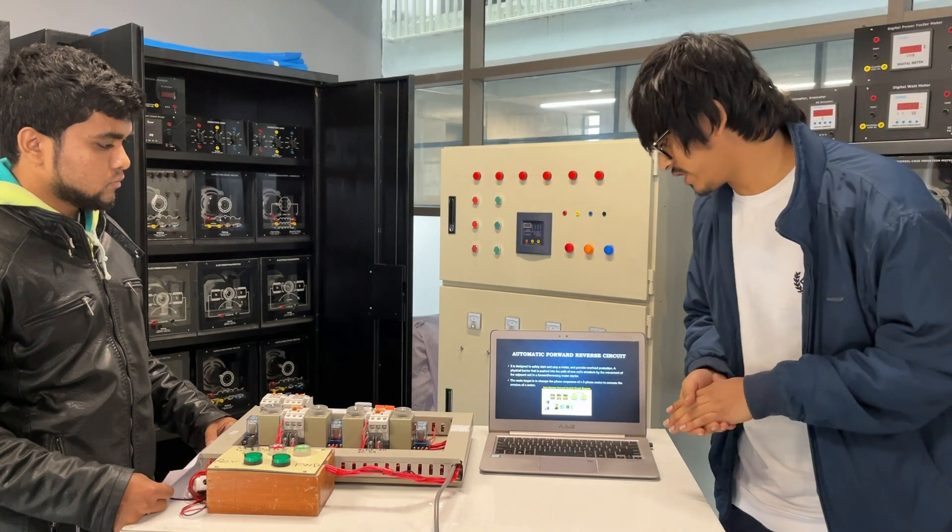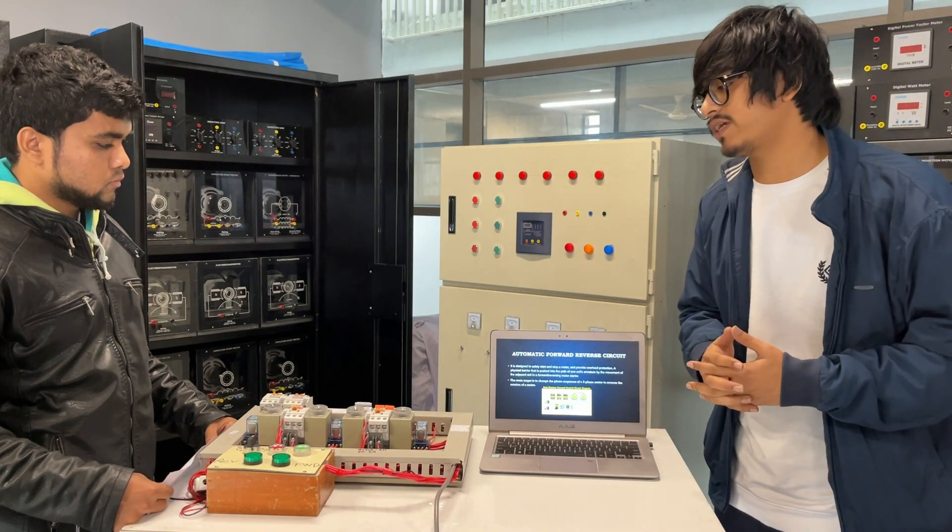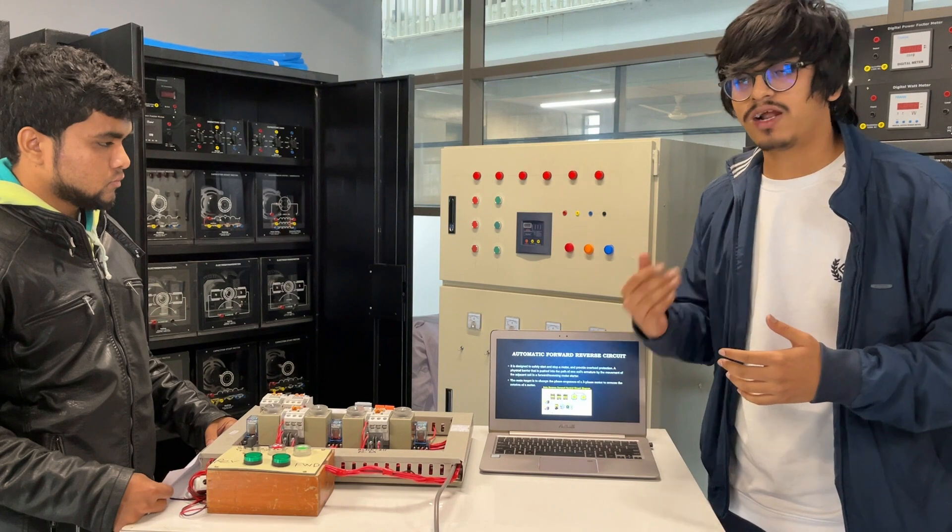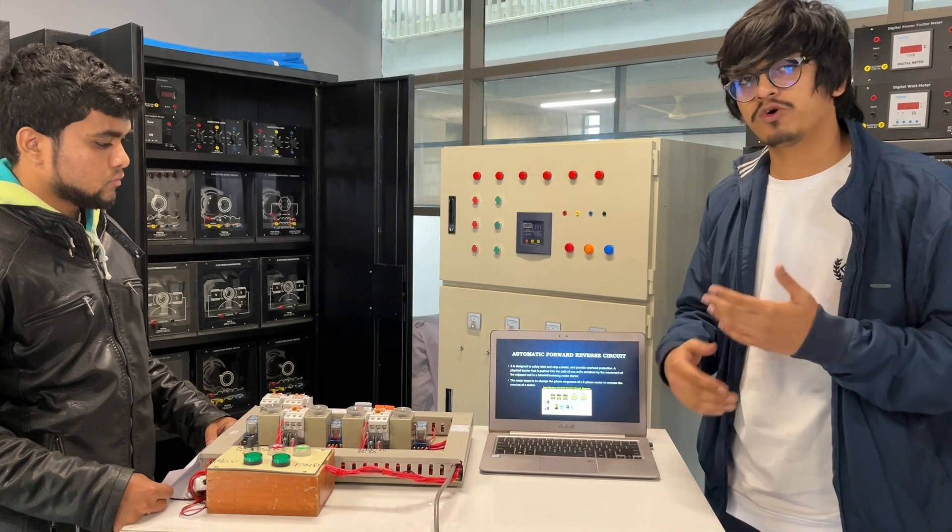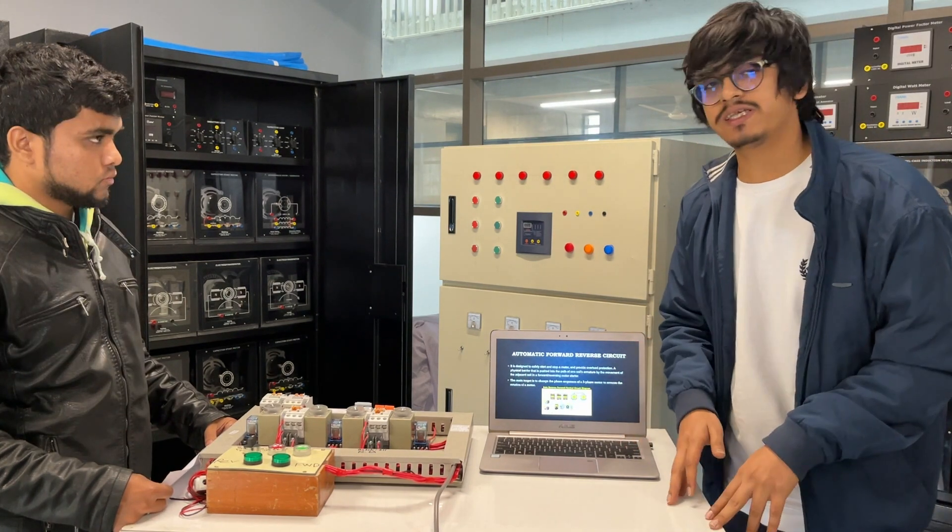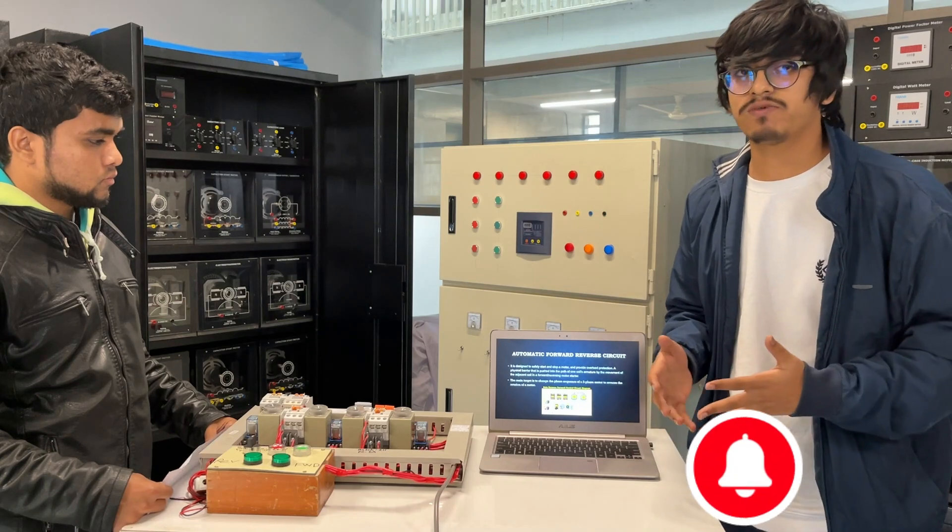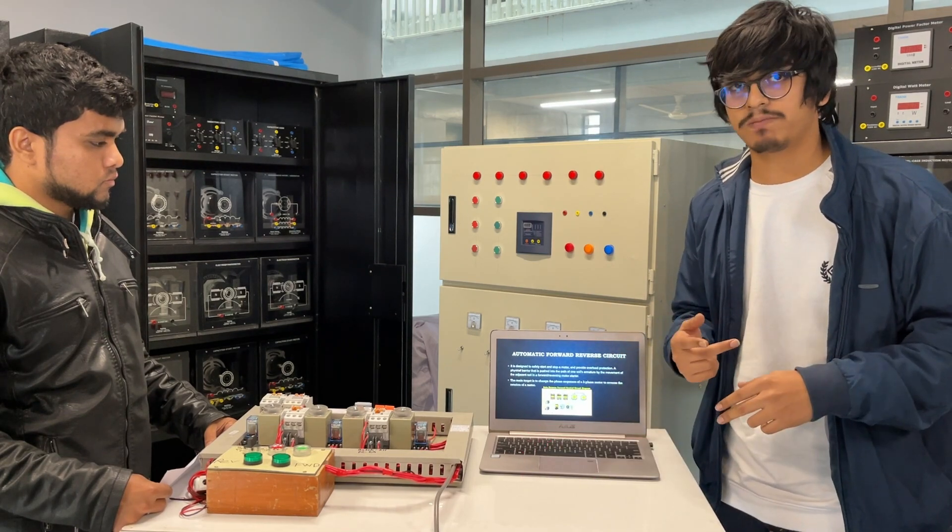Here is the automatic forward reverse circuit. So what does an automatic forward reverse circuit do? An automatic forward reverse circuit basically runs a motor in both directions. The basic principle is that in a three-phase motor when we are using forward, the phase sequence is RYB. In reverse we will be using RBY or BYR. Basically we will swap two phases.